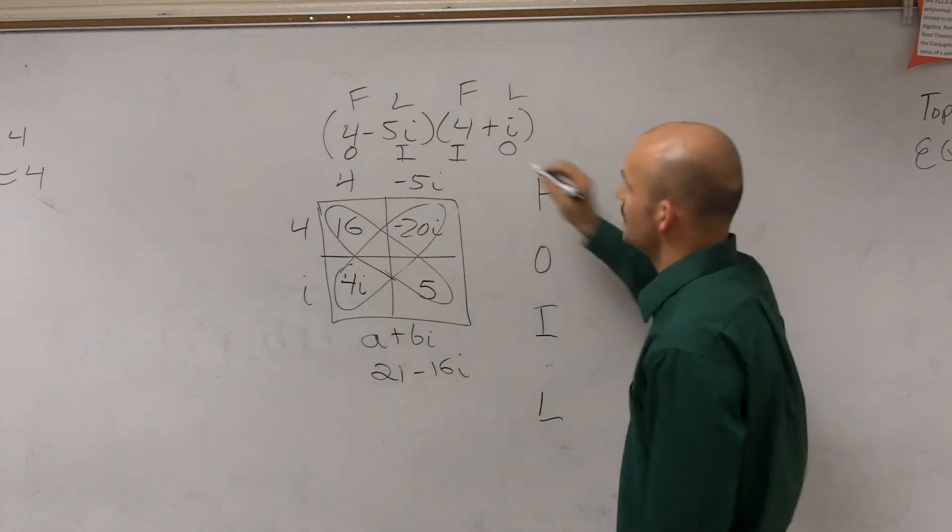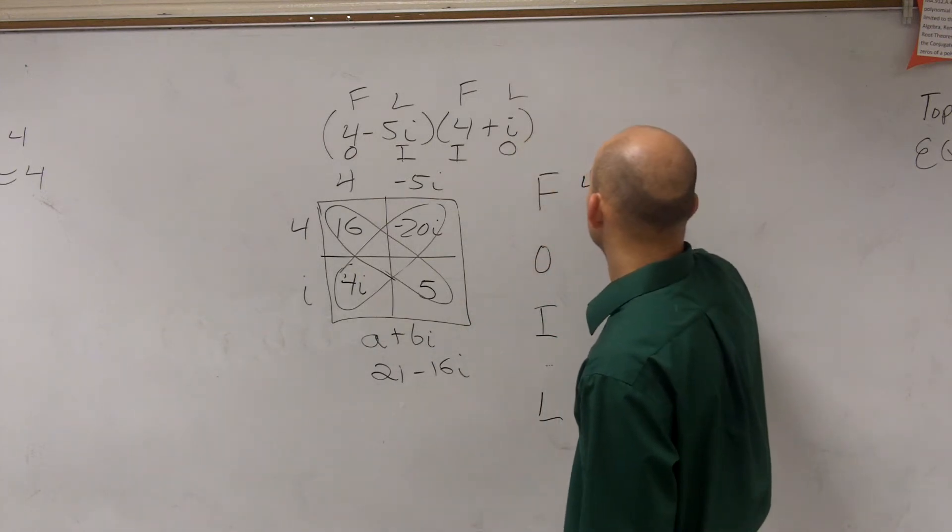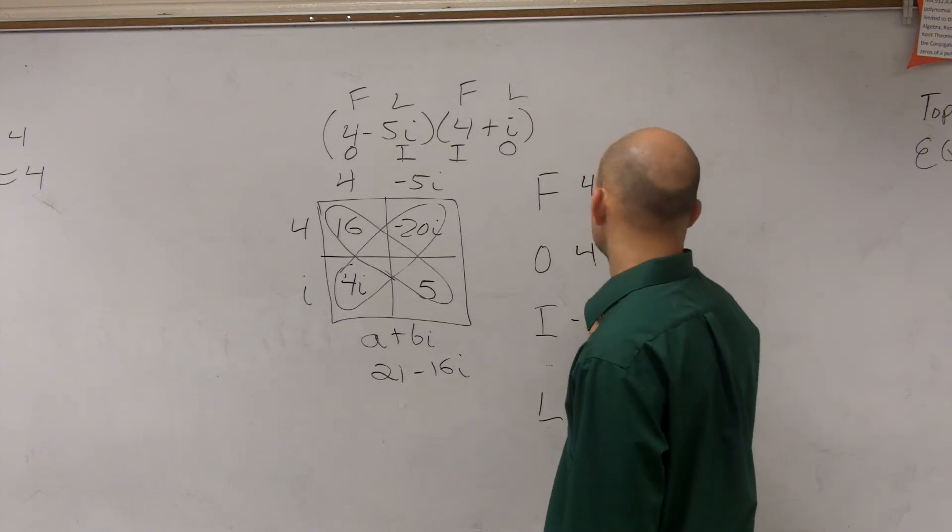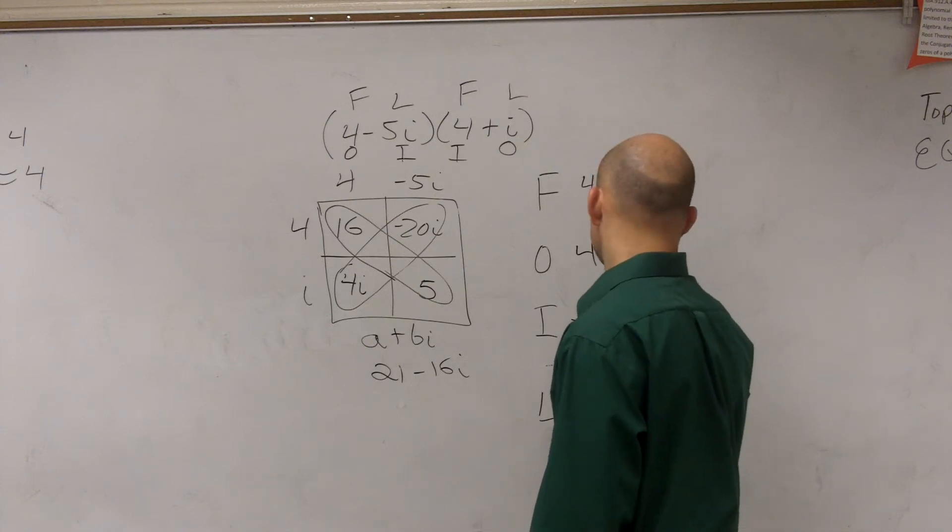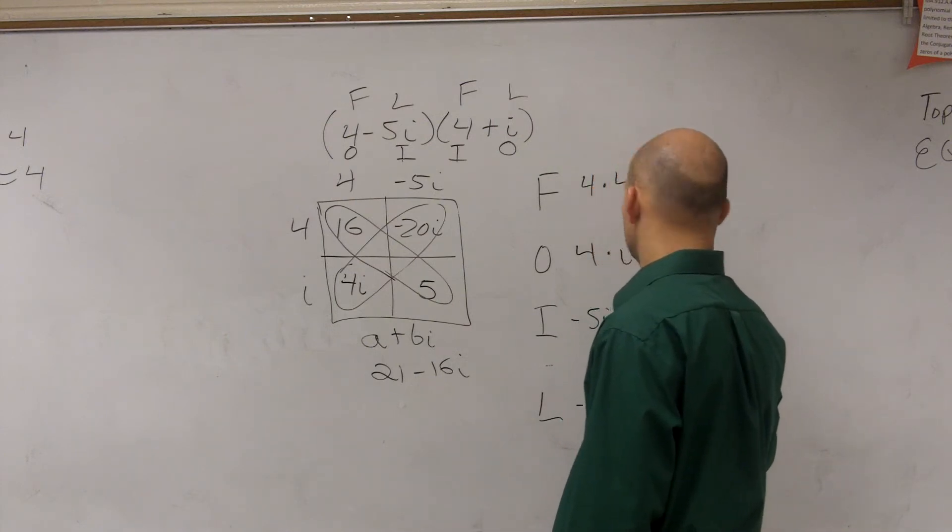And then you just take, well, first is 4 times 4. Outer is 4 times i. Inner is negative 5i times 4. And last is negative 5i times i.